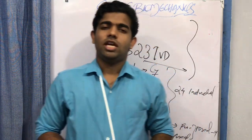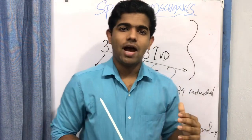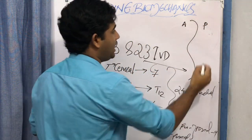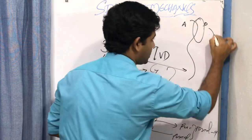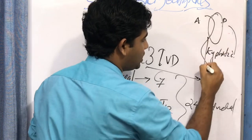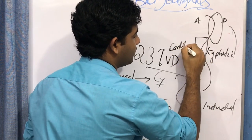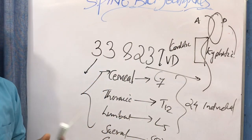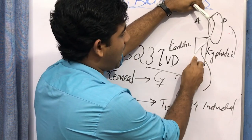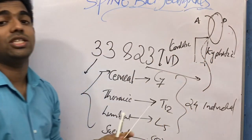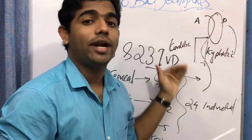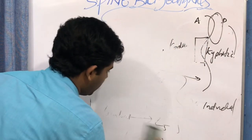Looking at the curves of the vertebral column, any curve with a posterior convexity is known as a kyphotic curve. Any curve with an anterior convexity is known as a lordotic curve. So there are two types of curves found in the vertebral column: kyphotic curves and lordotic curves.